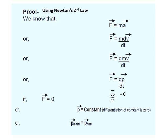If f is 0, means dp by dt is 0. That means p is constant because the differentiation of constant is 0.